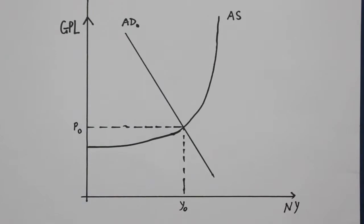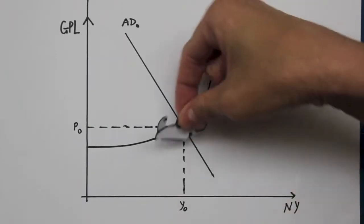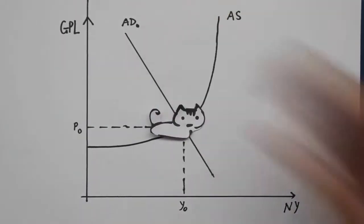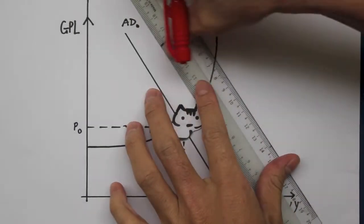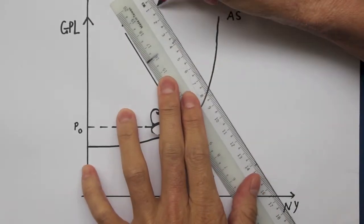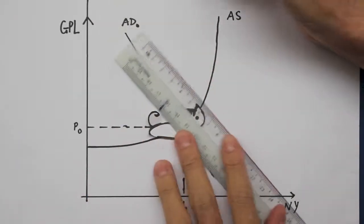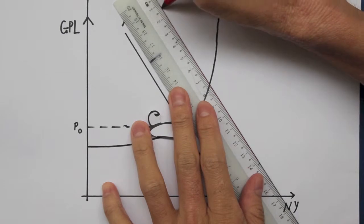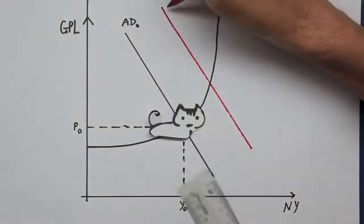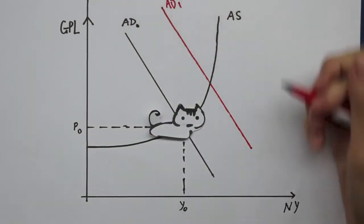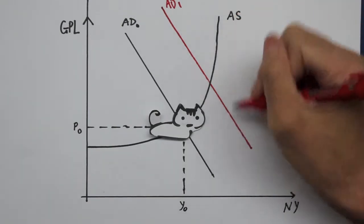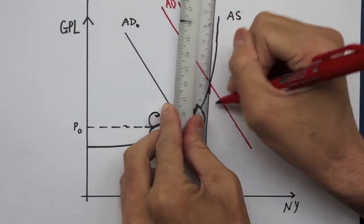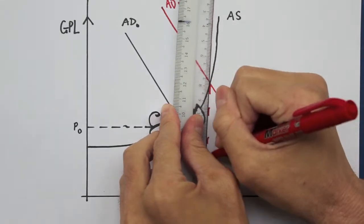This is represented by the ADAS model. The initial equilibrium point, before the fiscal policy is implemented, is indicated by the cat. The increase in C, I, and G caused the AD graph to move rightwards as shown. This shows an increase in national income and general price level, as shown by the new equilibrium point.